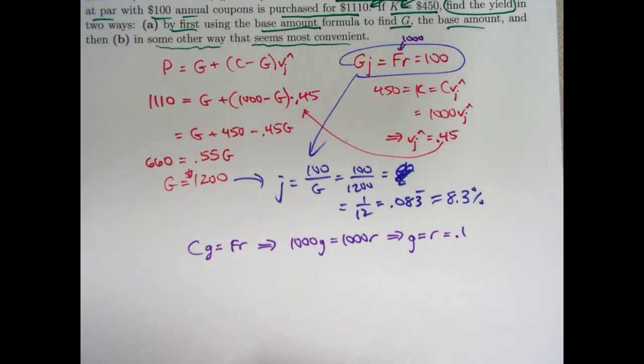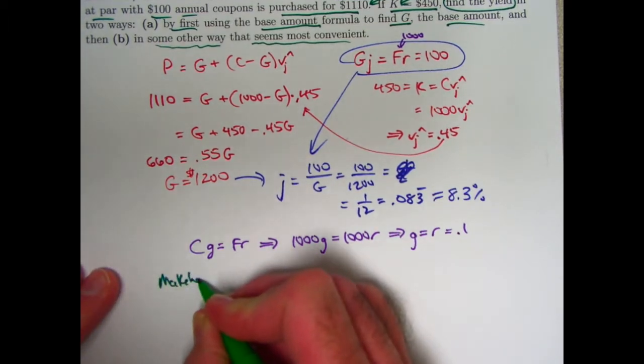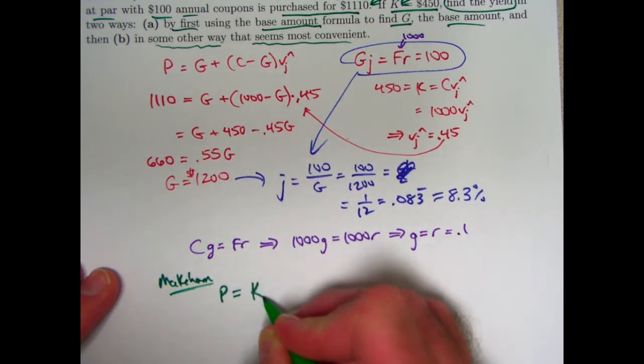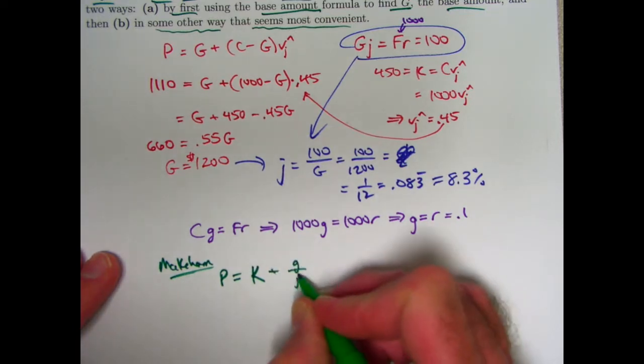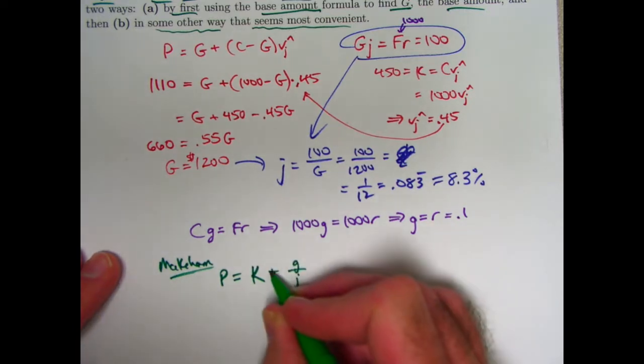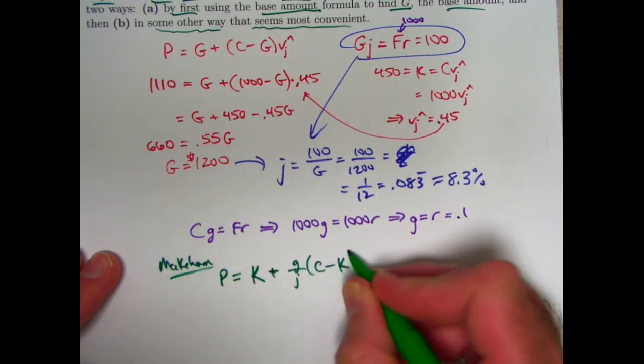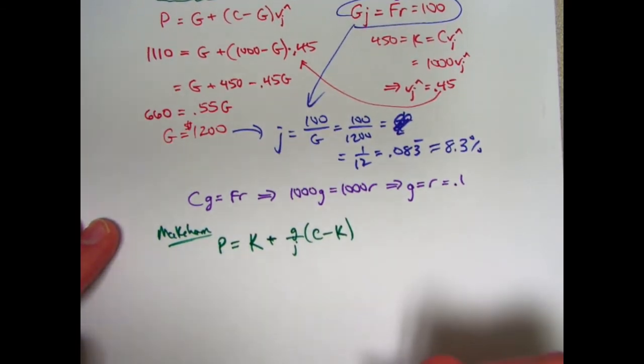Makeham's formula says that P equals K, the present value of the redemption amount, plus little g over j, and this is the same as little r in this case, times the difference capital C minus capital K. We know everything here except little j. We can solve for little j.